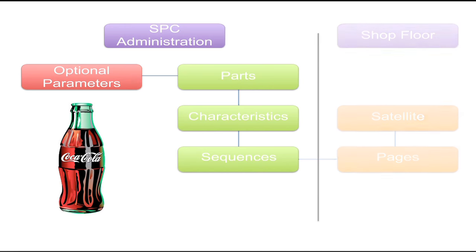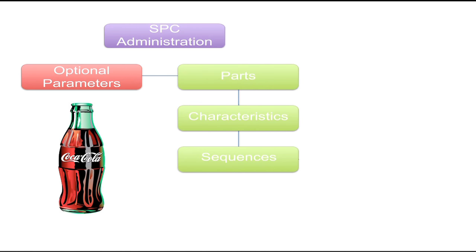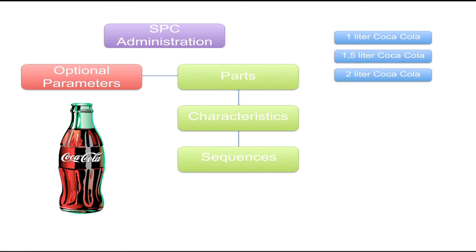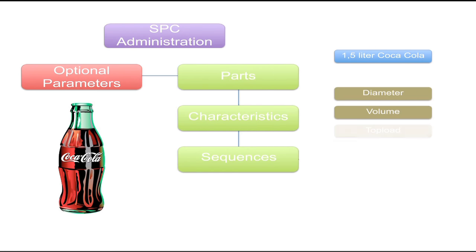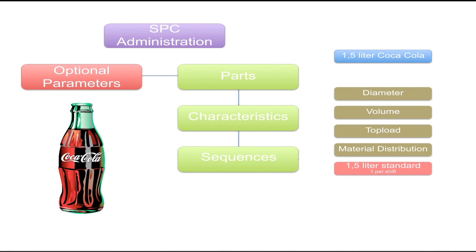Let's look at an example. In blow moulding we can have different bottles — for example, 1 litre Coca-Cola, 1.5 litre Coca-Cola, and 2 litre Coca-Cola. For every part, different characteristics will be measured: diameter, volume, top load, and various measurements for material distribution. A sequence will be created with a logical name and a frequency — for example, 1.5 litre standard bottle once per shift.